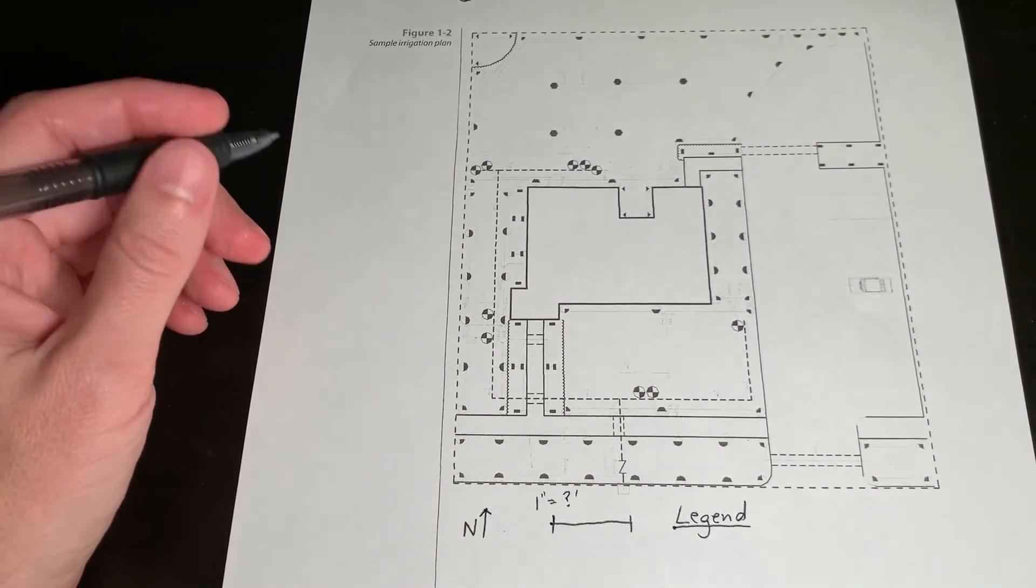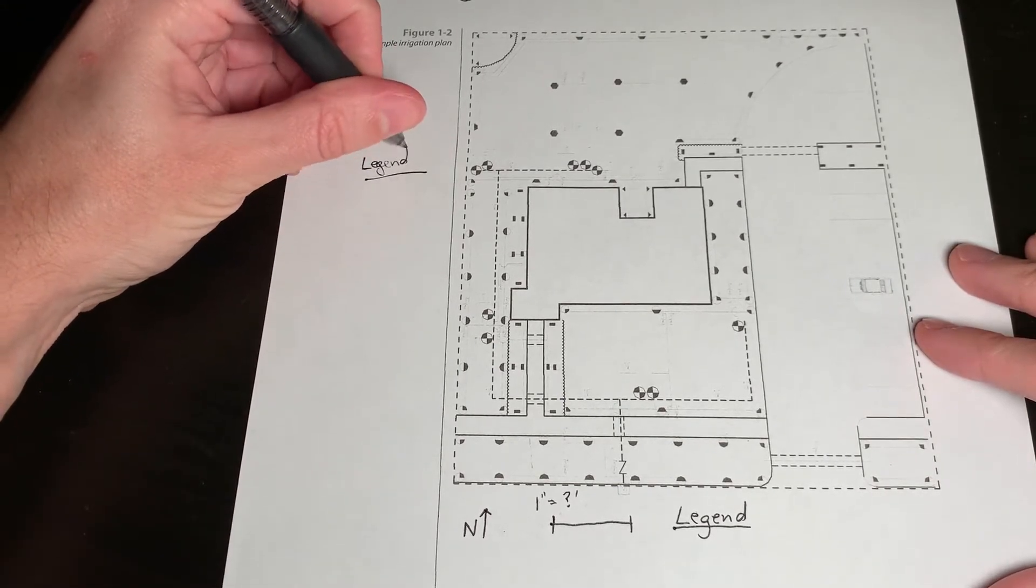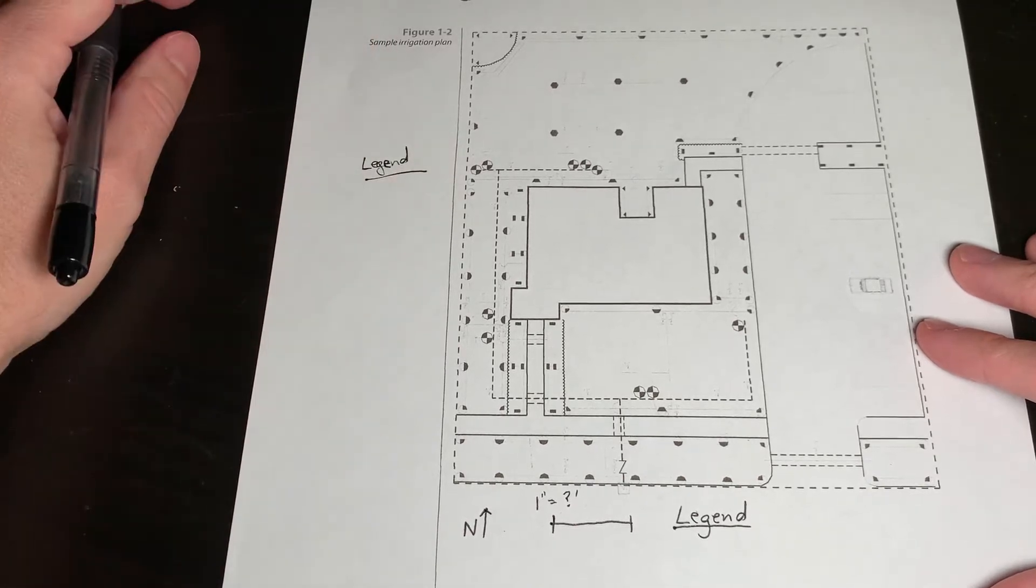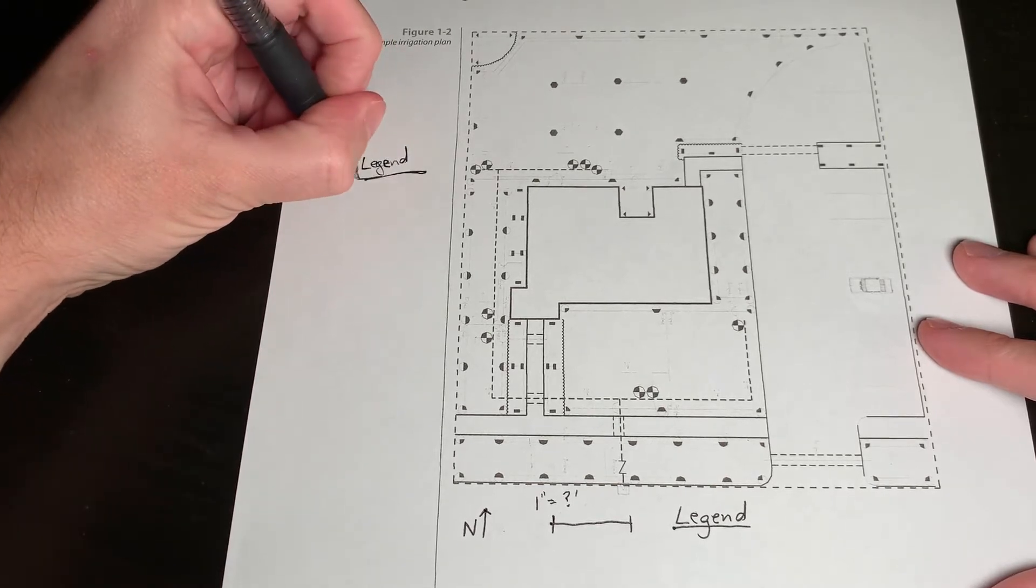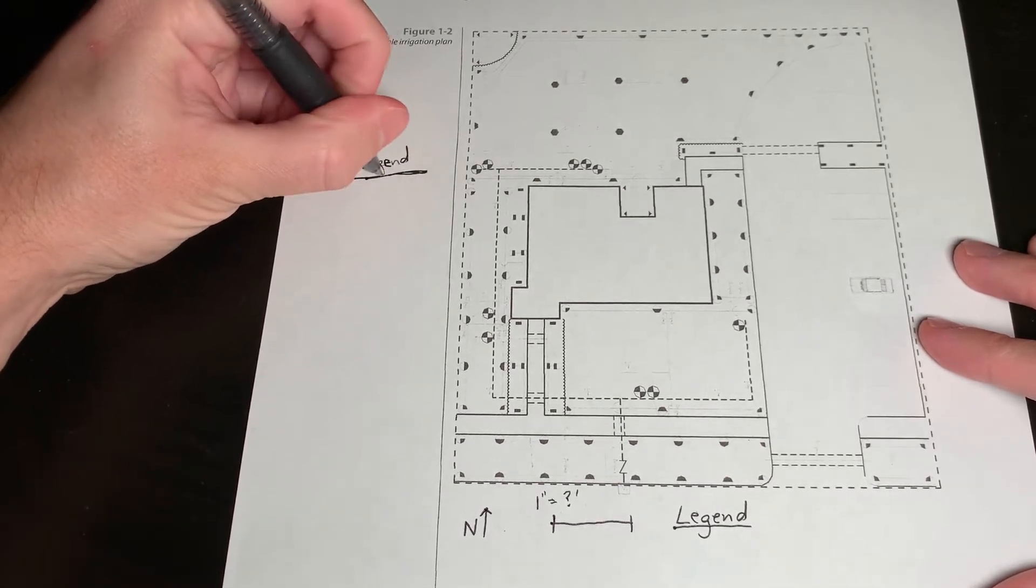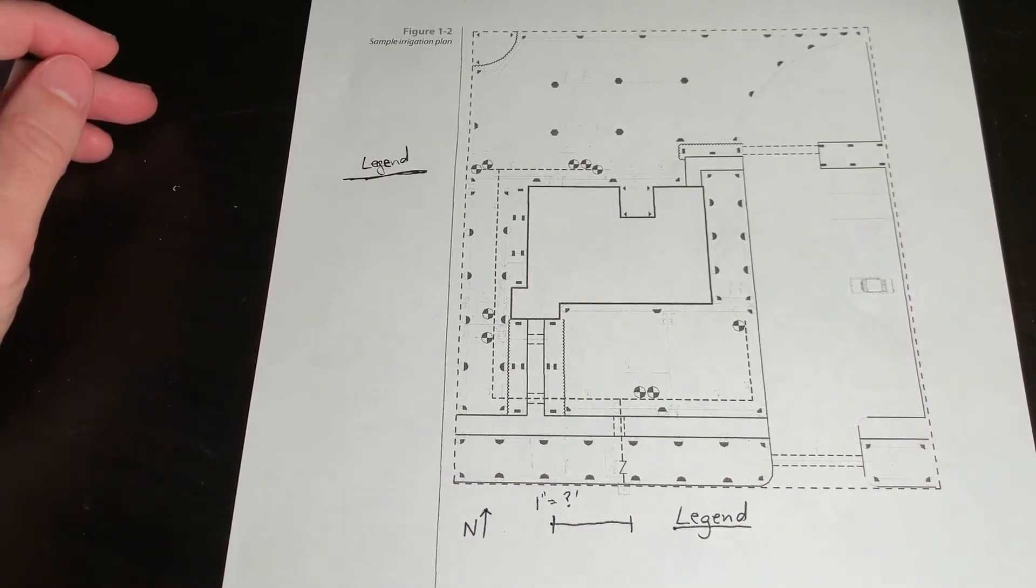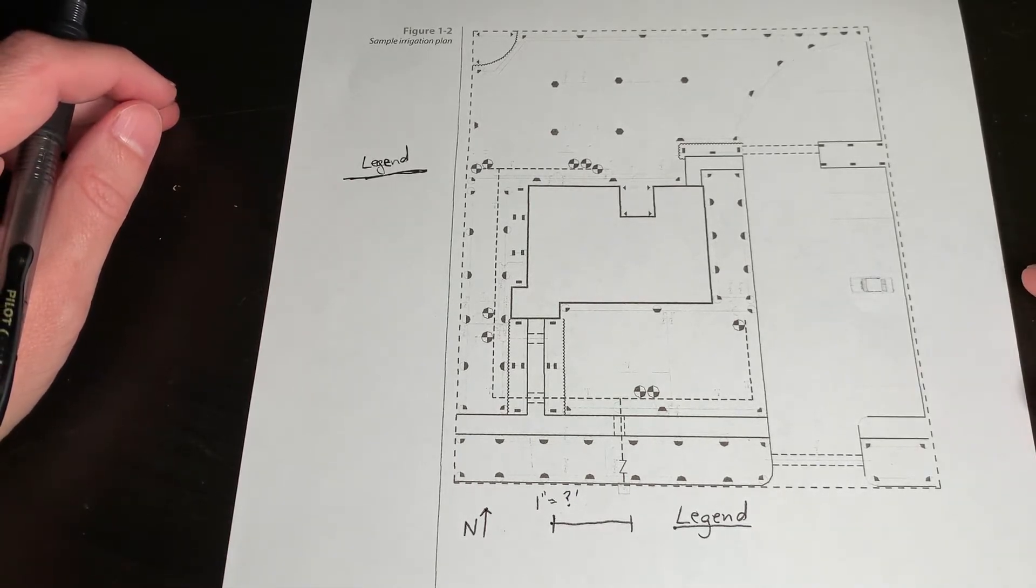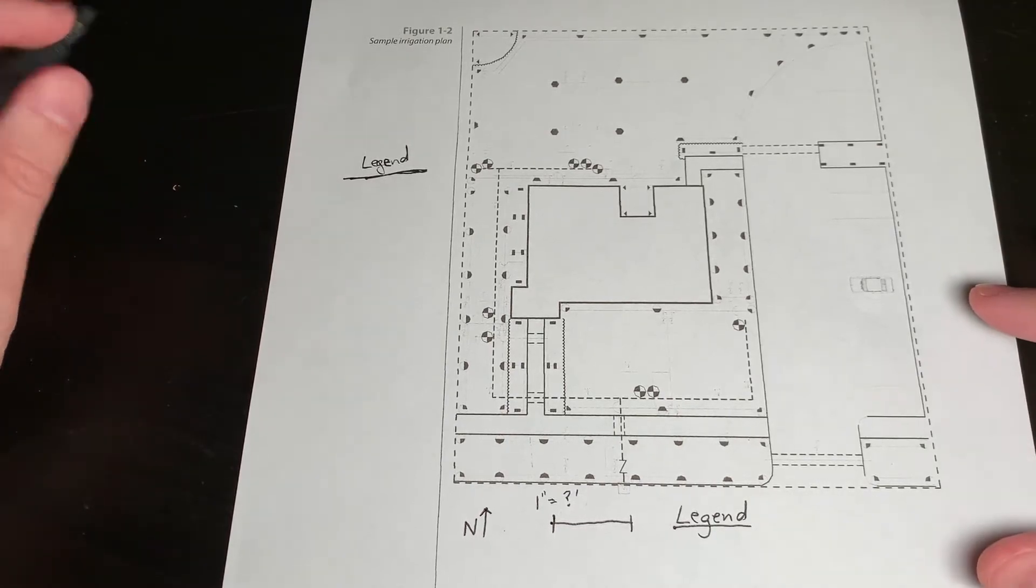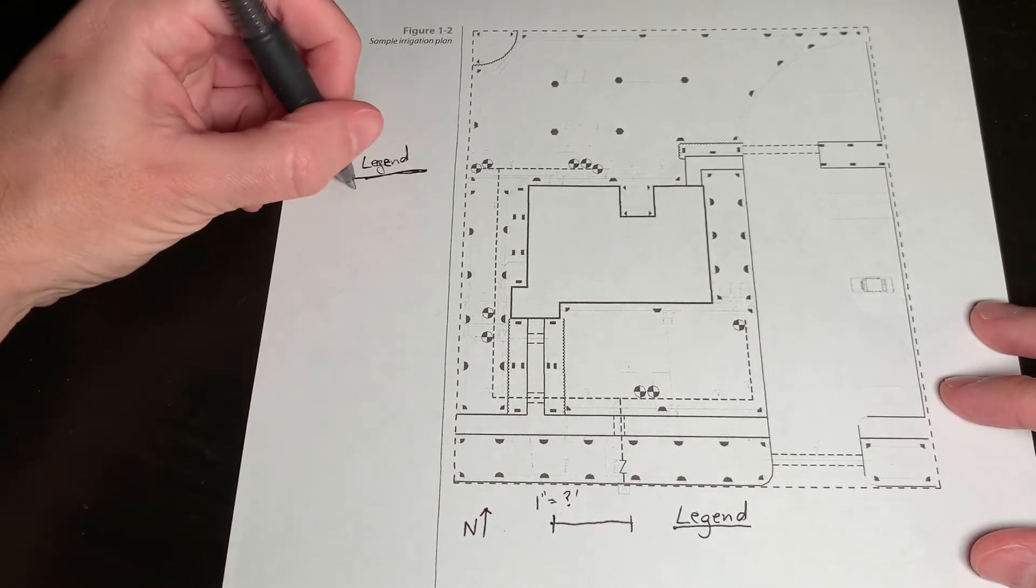So let's kind of break this down here. And we can start with the place where the water hits the landscape with the emitters and the sprinkler heads. So in this case, what we're looking at appears to be all spray heads. These are pop-ups, spray heads. And we have a variety of configurations.